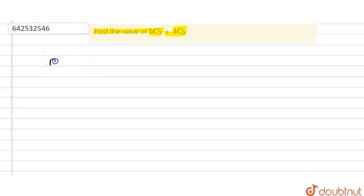So we know NCR. If NCR is a general form, it is N factorial divided by N minus R factorial into R factorial.